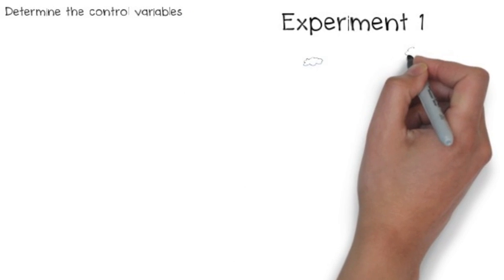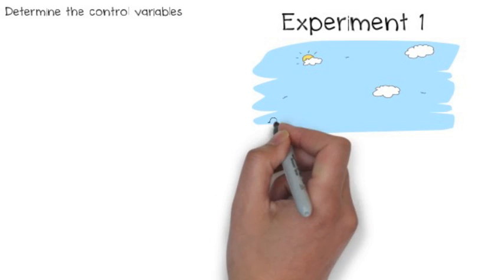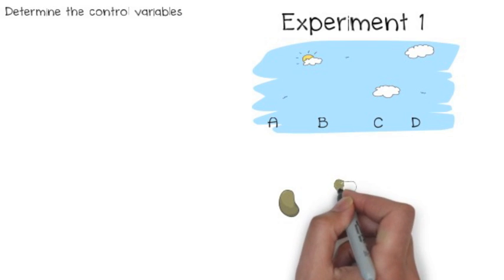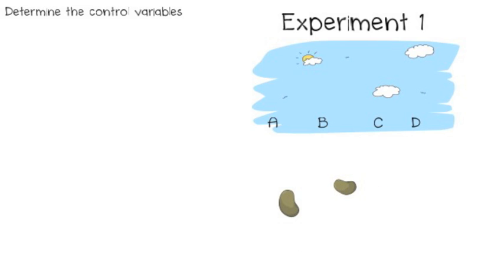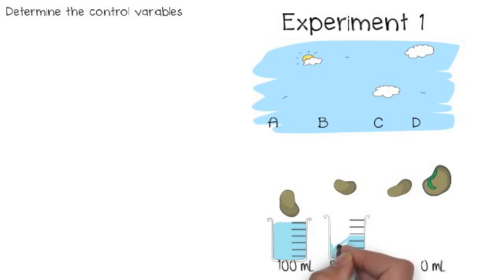Now we need to determine the control variables. When determining control variables, think about what your experiment might look like. I know I would need to get four seeds and figure out a place to plant them. I would randomly choose four seeds and plant them outside, maybe by a window. I'm going to determine how much water to give each — since the amount of water is my cause, I'll measure it out incrementally into 150, 25, and 0 milliliters.